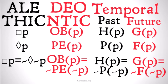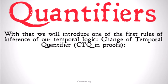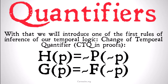Hopefully both of those make sense and follow our ideas of change of modal quantifier. This brings us to the first rule of inference for temporal logic: the change of temporal quantifier (CTQ). In proofs, HP is identical to it's not the case that P not P, or GP is identical to it's not the case that F not P. If these don't make sense, check out our other change of modal quantifier videos for deontic or alethic modal logic.